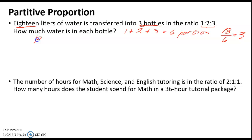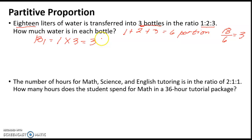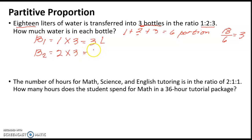Since we have three bottles, bottle one has a ratio of 1, so 1 times 3 equals 3 liters. Bottle one has 3 liters of water. For bottle two, the ratio is 2, so 2 times 3 equals 6 liters for bottle two.